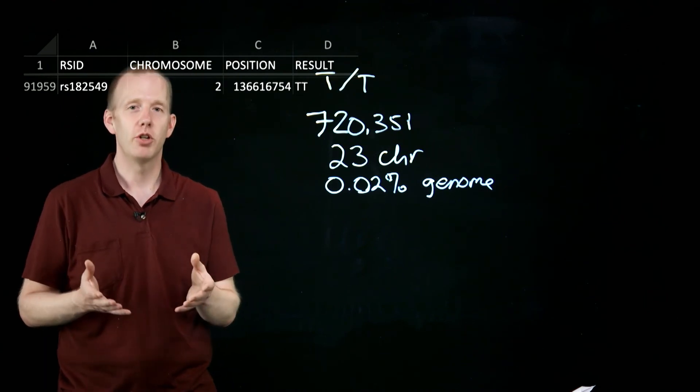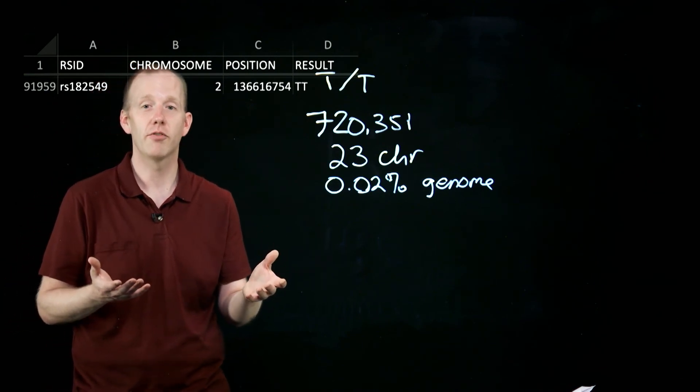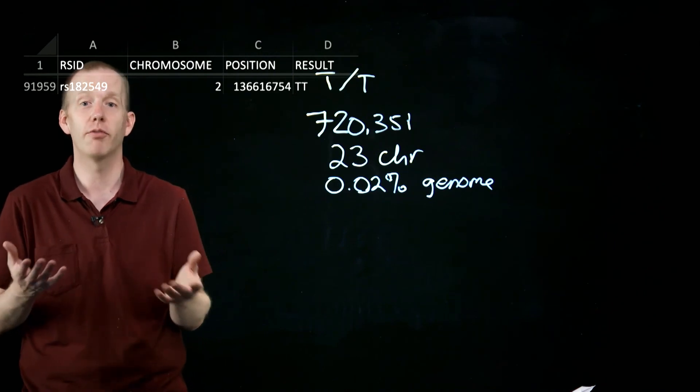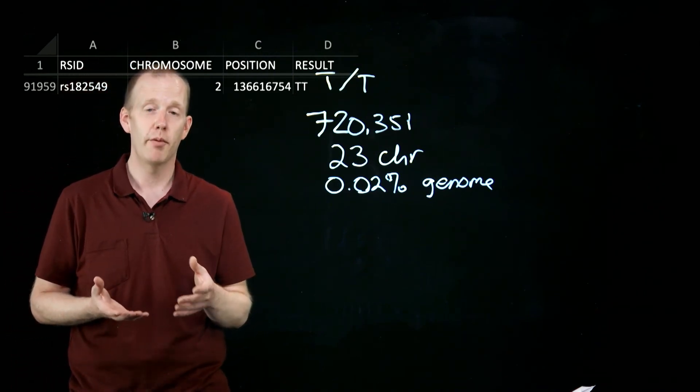Because, what if an insurance company somehow got a hold of your genetic testing information and they started looking at all of the different SNPs that they know are related to different susceptibilities to human diseases? That's been a concern for a long time about genetic testing.